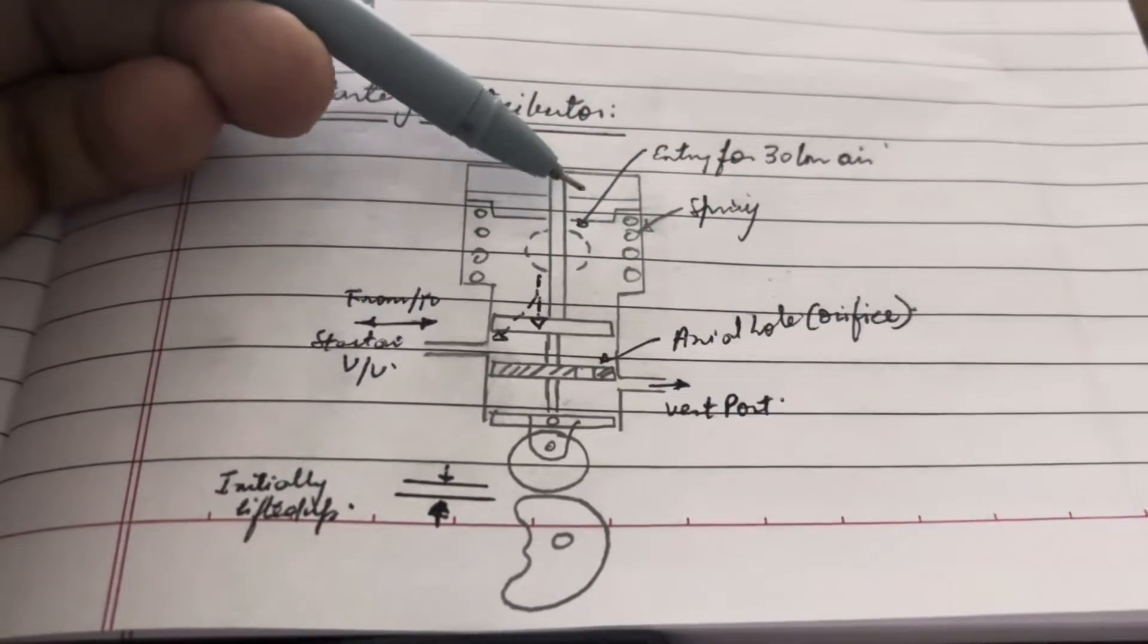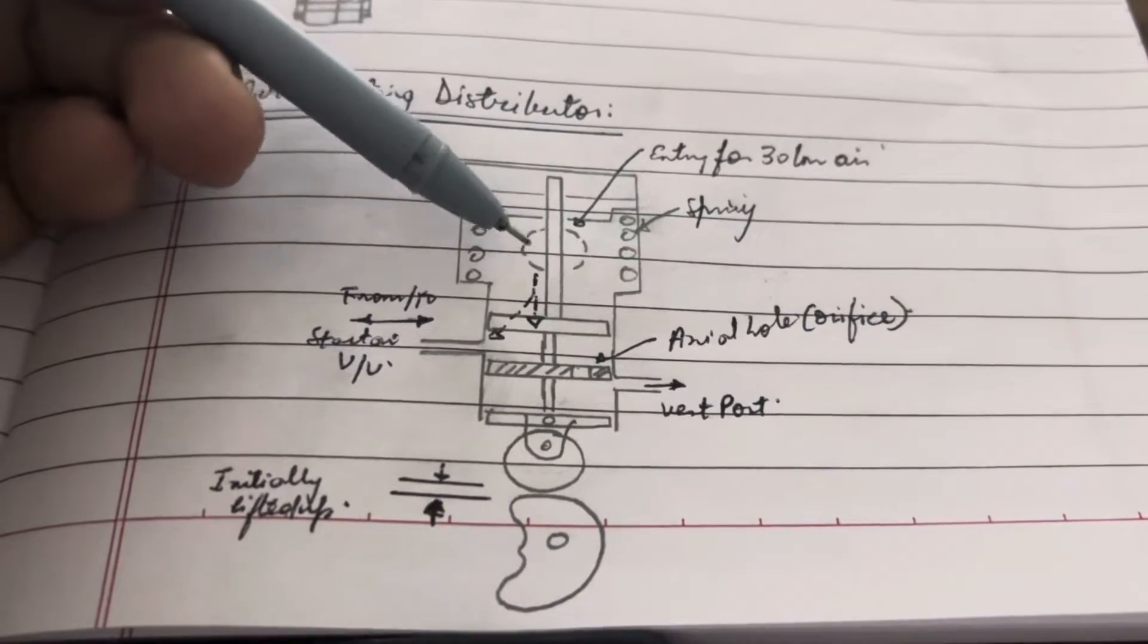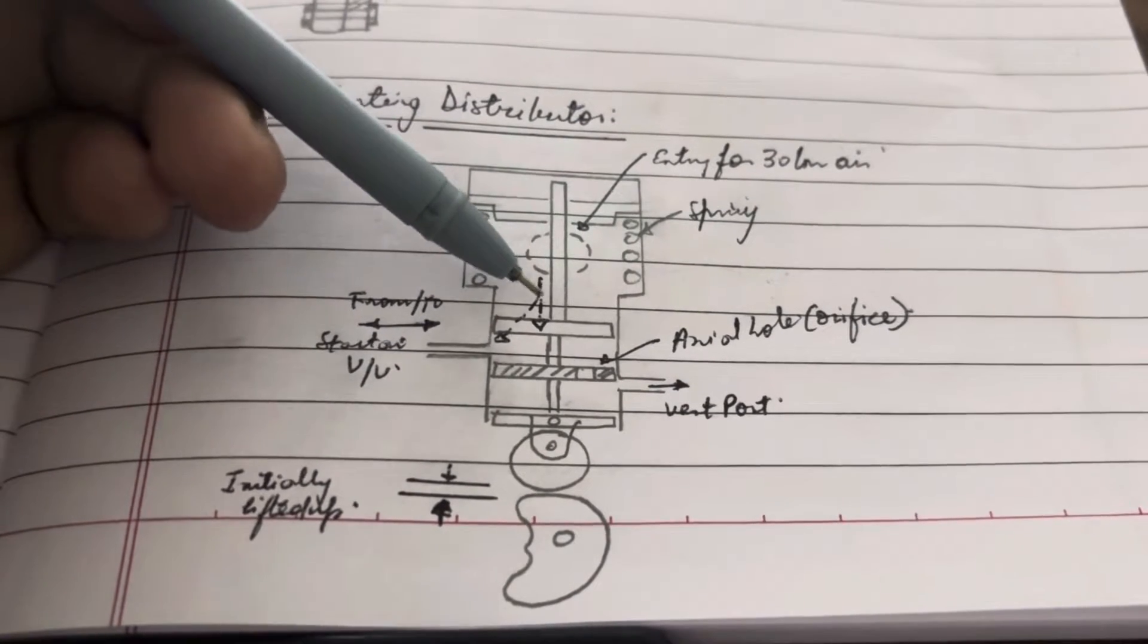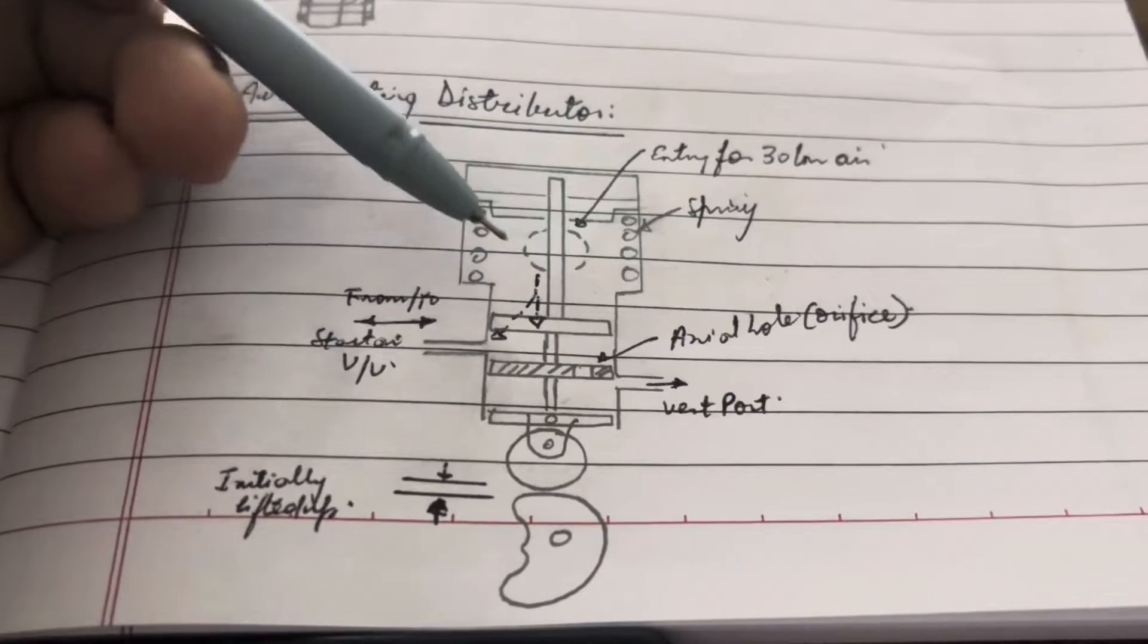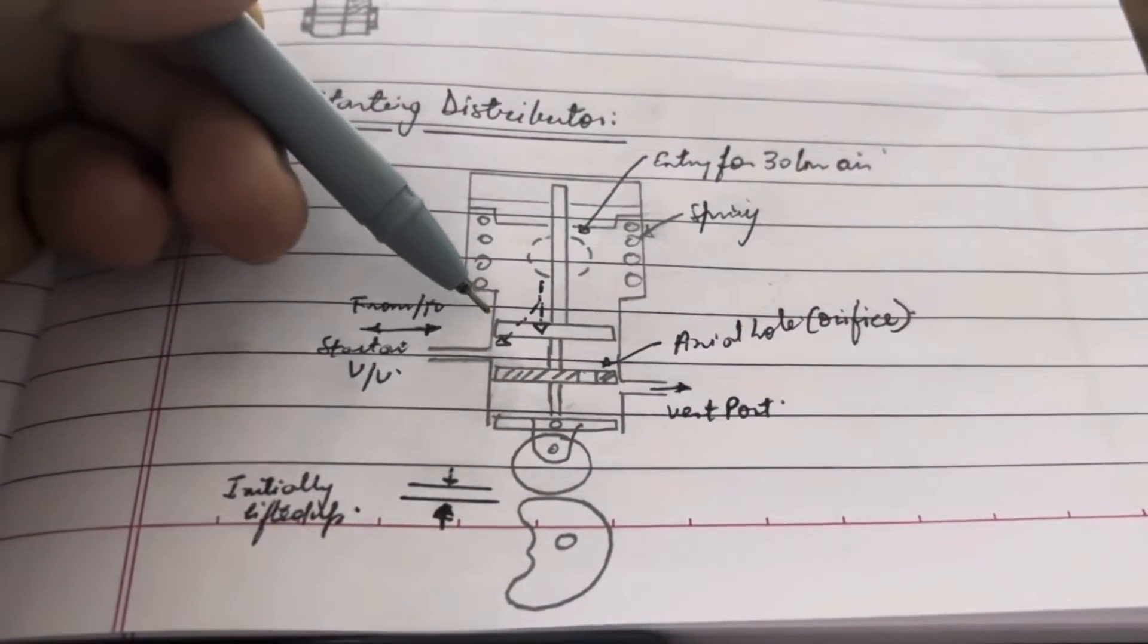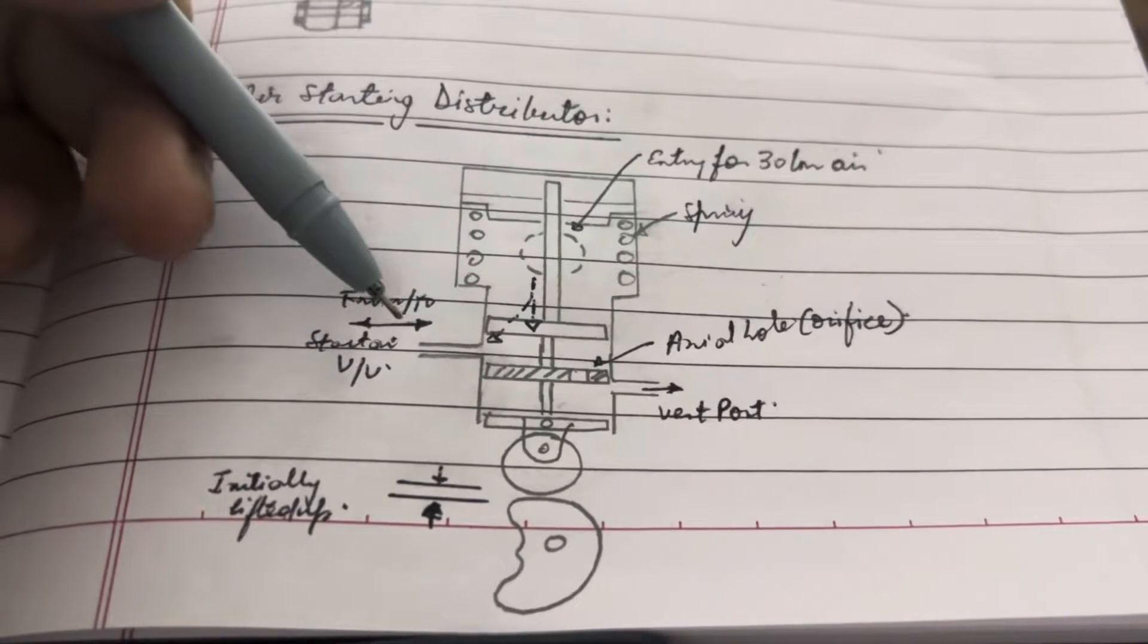So during this situation when the air pushes the piston down, there are two scenarios. One is when this particular hole—that is, the one which is leading towards the starting air wall—is covered at this point of time.